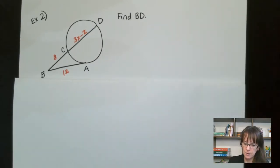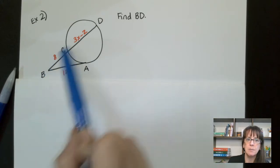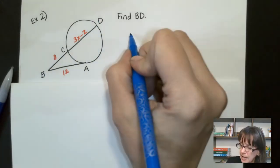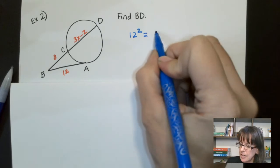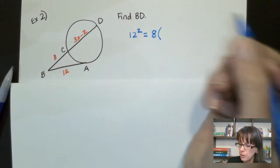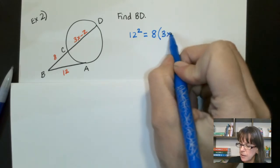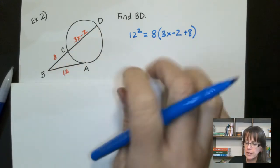Now on this guy, let me use a different color here. Remember I said outside squared equals outside times the total. So outside squared, that's this bit equals the outside, which is eight times the total. And so our total is 3X minus 2 plus 8 because we have to include that bit. So we want to do the total here.